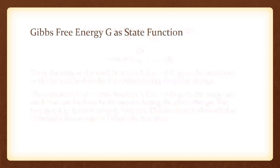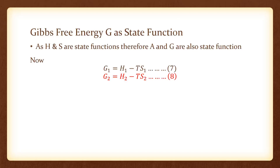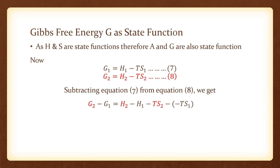Now let us discuss another point: Gibbs free energy as a state function. G equals H minus TS, where enthalpy H and entropy S are both state functions, so G is also a state function. For the initial state at constant temperature, G1 equals H1 minus TS1, and for the final state G2 equals H2 minus TS2. Subtracting, we get delta G equals delta H minus T delta S.